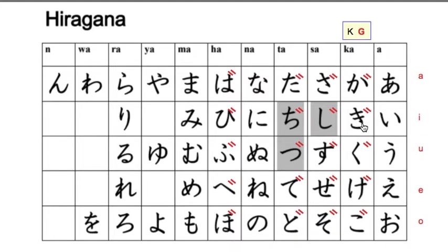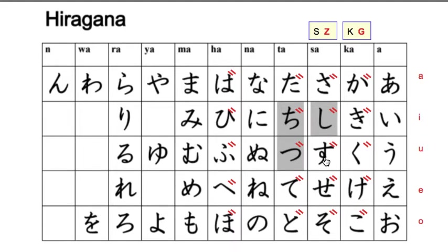For the S sound, when you add ten-ten, the S becomes a Z sound. So sa becomes za, so becomes zo, su becomes zu, and se becomes ze.